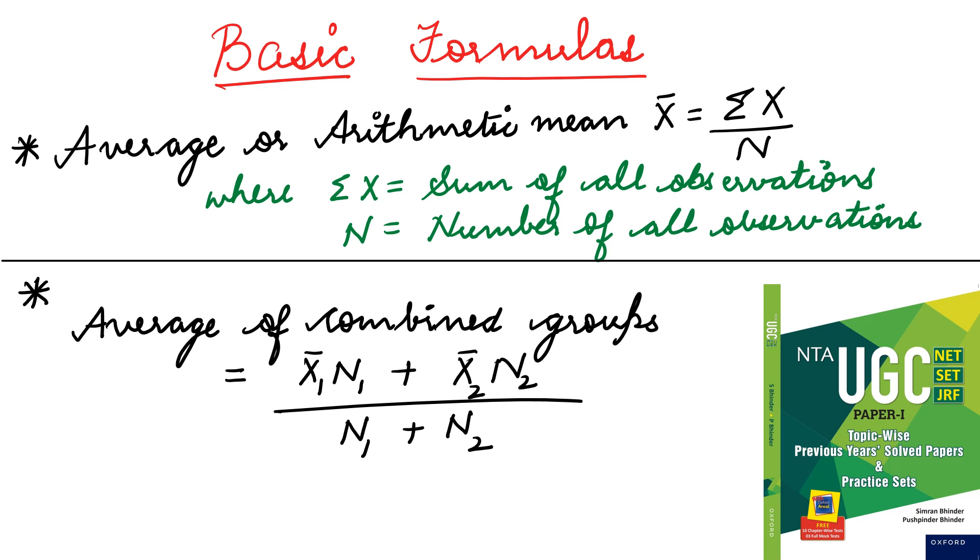Second formula is average of combined groups. This formula we have to apply when we have more than one group - two groups, three groups, or more than that. In that case, what will we do? First group's mean is represented by x bar 1, first group's number of observations by n1 plus x bar 2 into n2 divided by n1 plus n2. You have to remember this formula well. In the questions, we will apply this formula and you will understand how we can calculate averages.